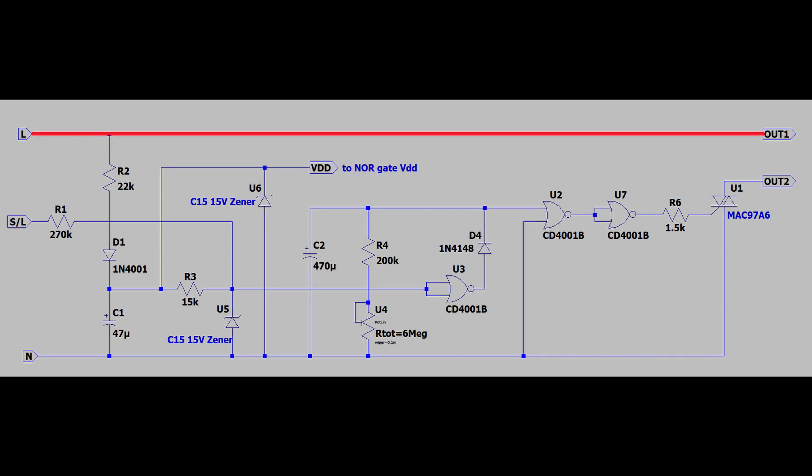The live pin of the load is permanently connected. The neutral pin is switched by the triac, which is controlled by the circuit. We can split the circuit into two parts. First, the supply voltage for the IC.